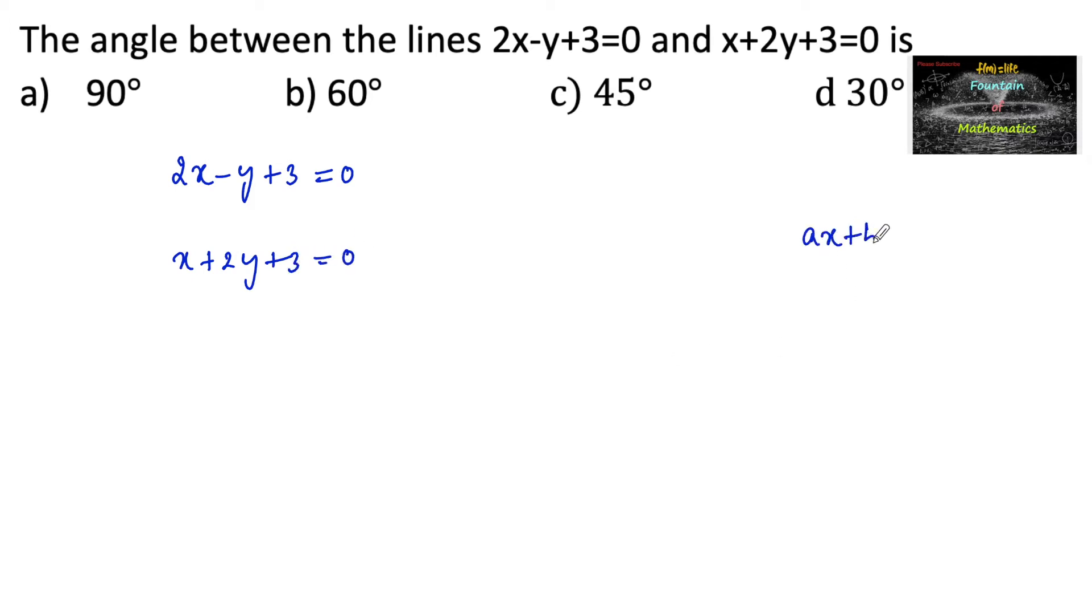We can say that for the line equation ax plus by plus c equals 0, slope is equal to minus a upon b. So for the first line, the slope m1 is equal to minus 2 upon minus 1, which is 2. And for the second line, the slope m2 is equal to minus 1 upon 2.